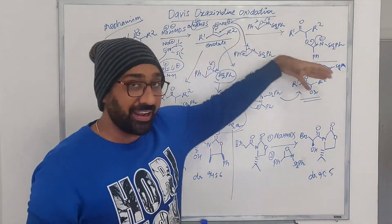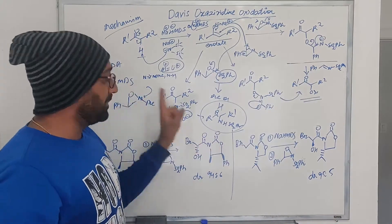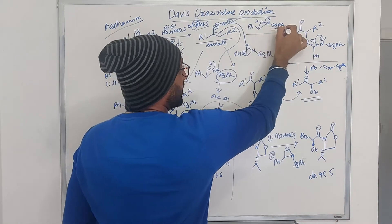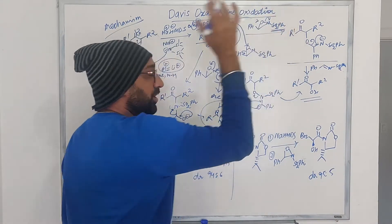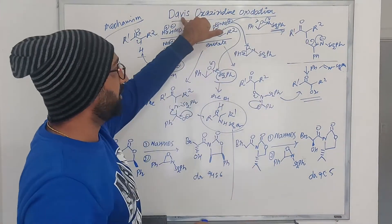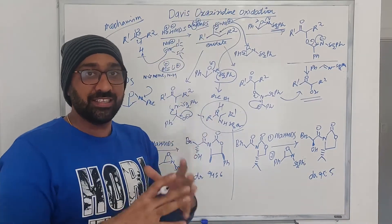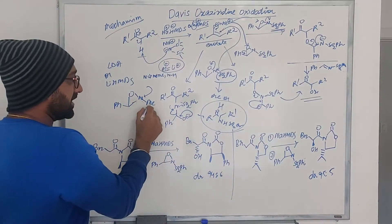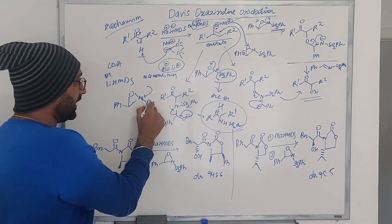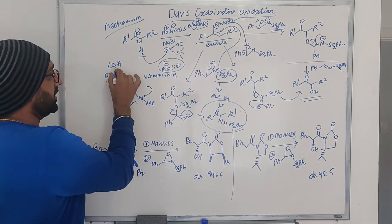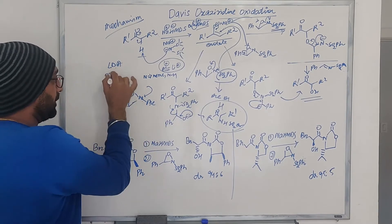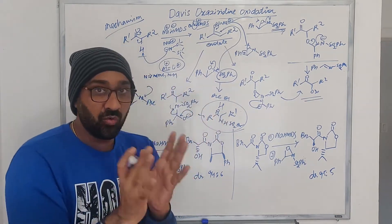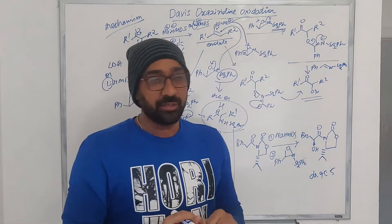That is the reason why it is very important that you have an electron-withdrawing group next to the nitrogen. Only then will the reagent be categorized as Davis-Oxaziridine and cause alpha hydroxylation. If you are using LDA or NHMDS and the main focus is on the countercation, then you are going to get the alpha amination. Just keep that in mind.